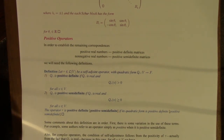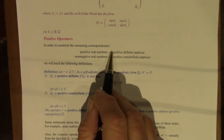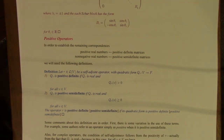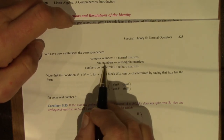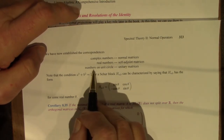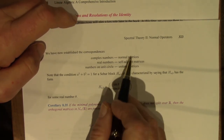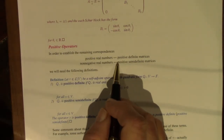The next topic in the book is that of positive operators — positive definite and positive semi-definite. That will allow us to complete this correspondence between complex numbers and normal matrices. We've already realized these correspondences: real numbers correspond to self-adjoint matrices, numbers on the unit circle correspond to unitary. So this side is a generalization to higher dimensions of this side. I want to finish this correspondence here.